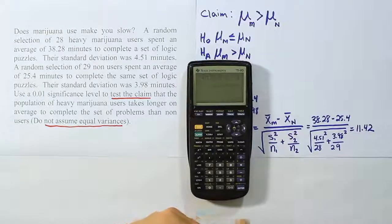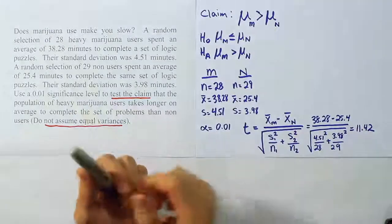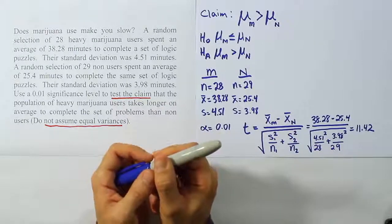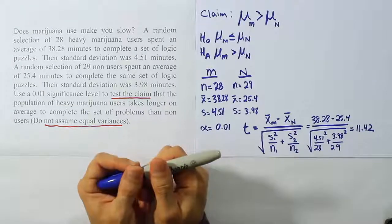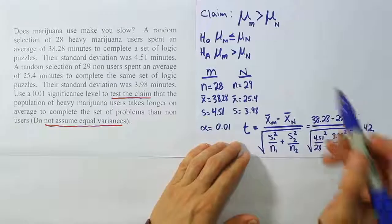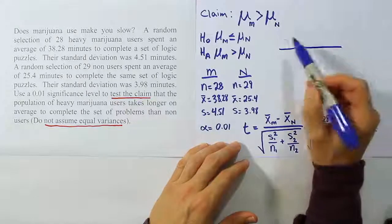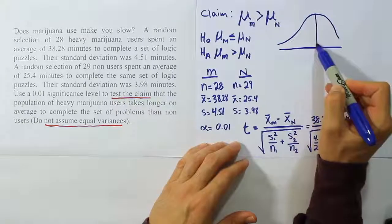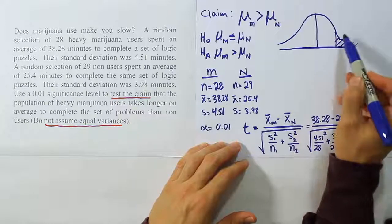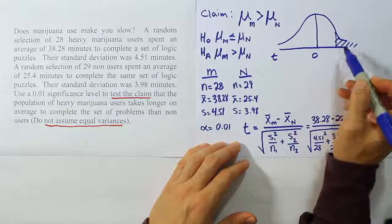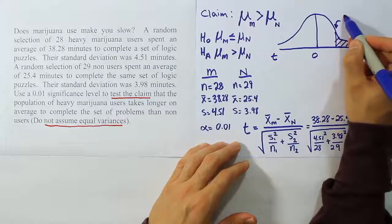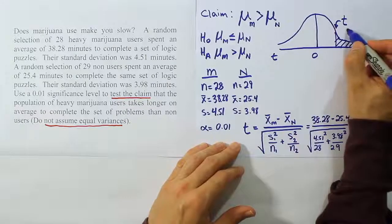A test stat of 11.42 is extremely large. In the real world we might stop here and conclude a significant result, rejecting the null hypothesis, because it's so far into the rejection region. But for our classroom exercise, let's find the critical value. We'll draw the bell curve and label the rejection region. This is a right-tailed test because Hₐ has a greater than symbol. We need alpha = 0.01 in one tail, but first we must determine the degrees of freedom.